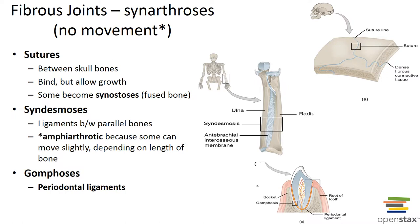Syndesmoses are a type of fibrous joint where the bones are connected by an interosseous ligament and are amphiarthrotic. The most common example is the distal articulation between the tibia and fibula, called the tibiofibular joint. Gomphosis is a synarthrotic joint, also known as a peg-and-socket joint. This type of joint is found on the maxilla and mandible where the teeth are fixed securely in the sockets of the alveolar margins. The fibrous connective tissue between a tooth and its socket is called a periodontal ligament.